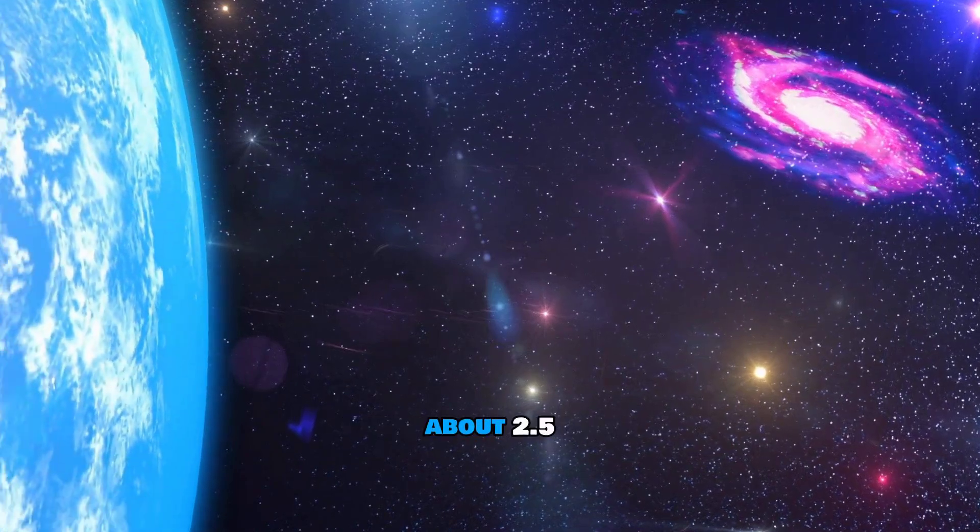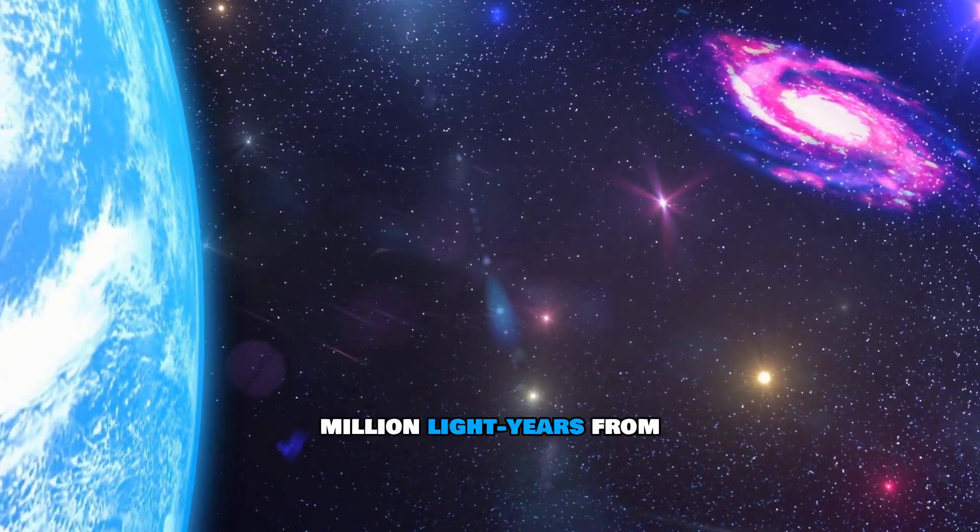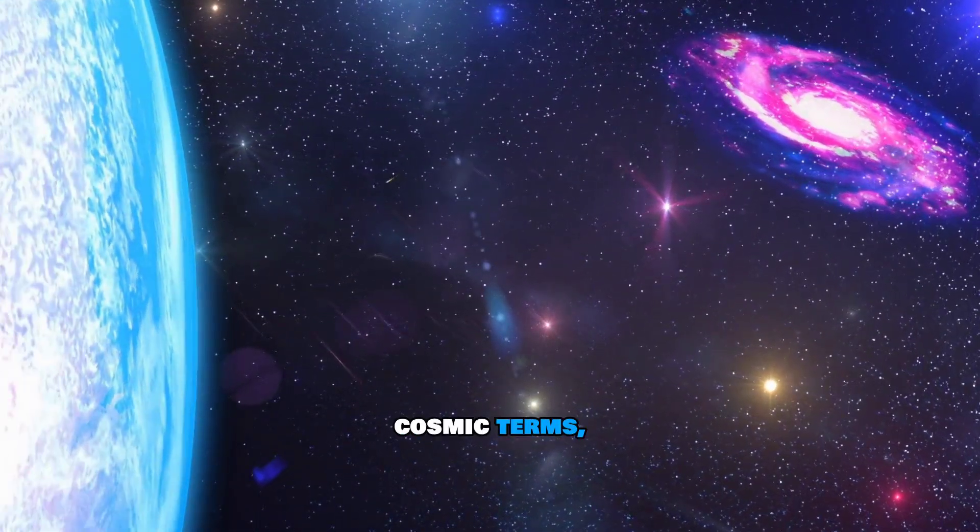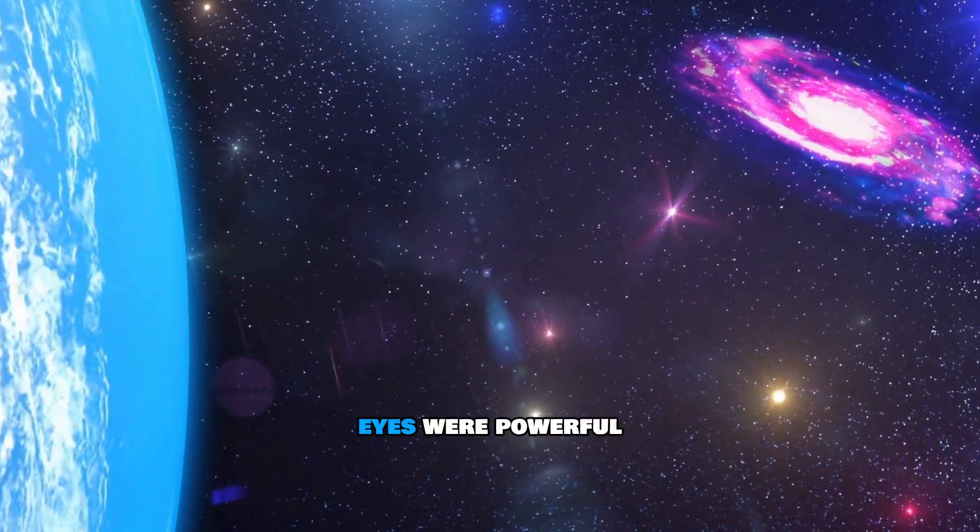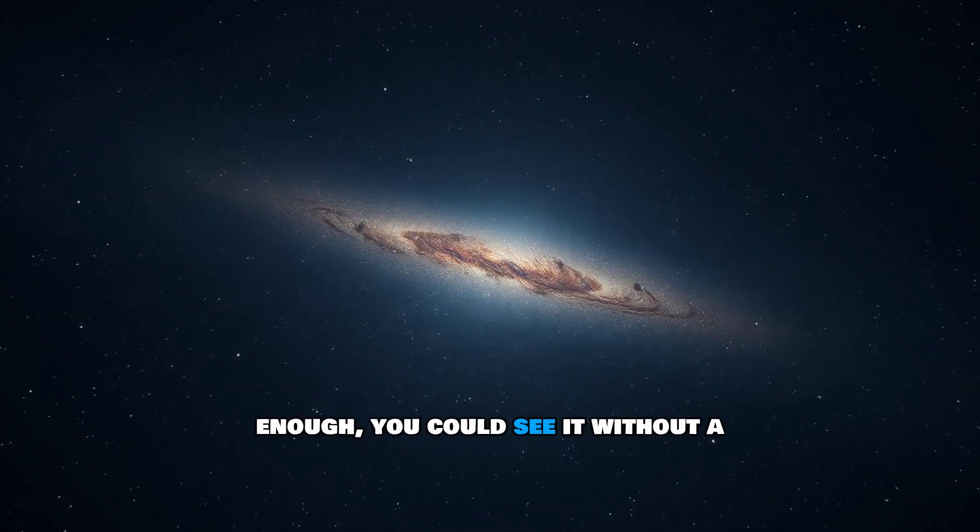Andromeda is located about 2.5 million light-years from Earth. In cosmic terms, that's our backyard. In fact, if your eyes were powerful enough, you could see it without a telescope.